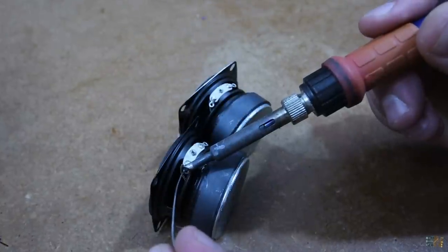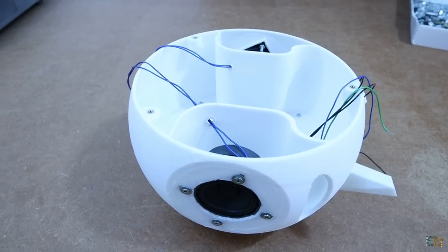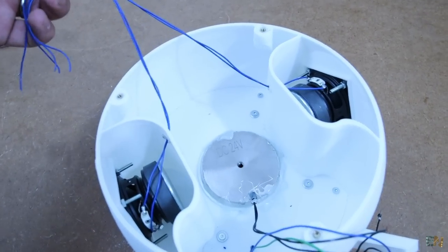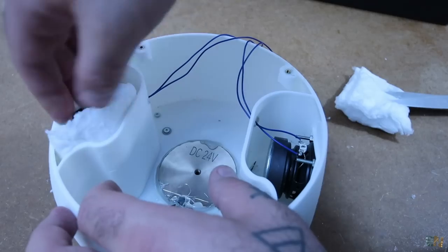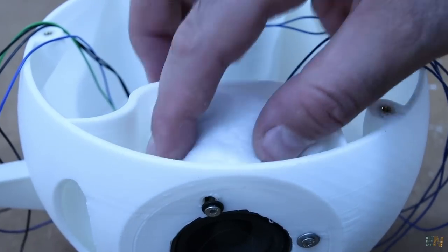Then we add the speakers on the side using some screws. We pass the wires into the interior of the enclosure. Then we fill the small box with some special cotton in order to remove the vibrations and the unwanted resonances.